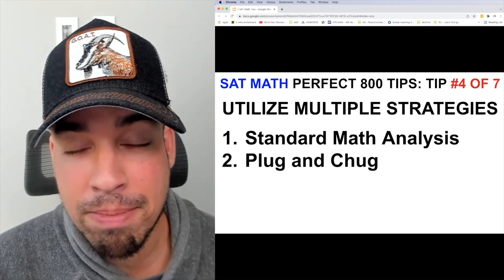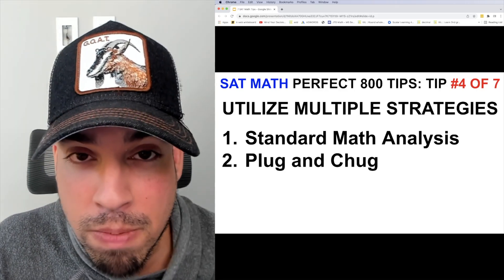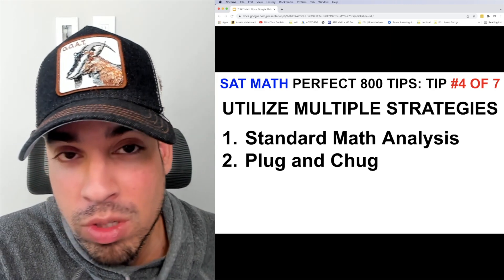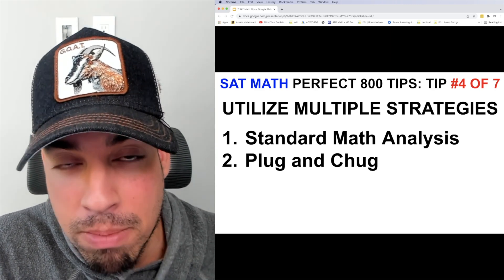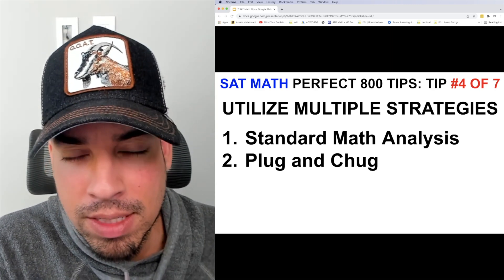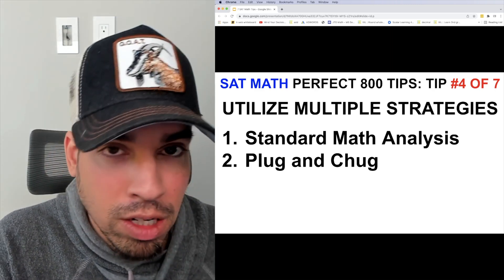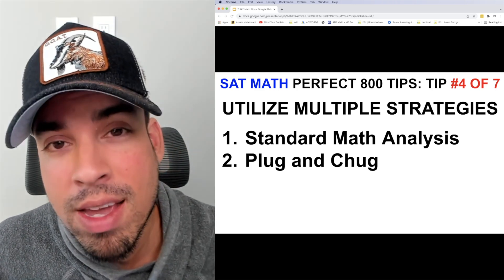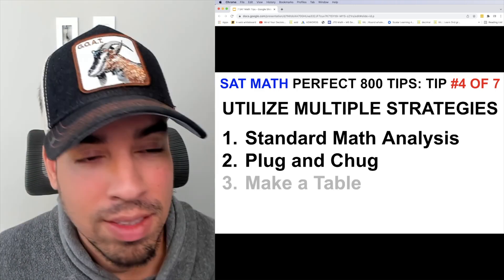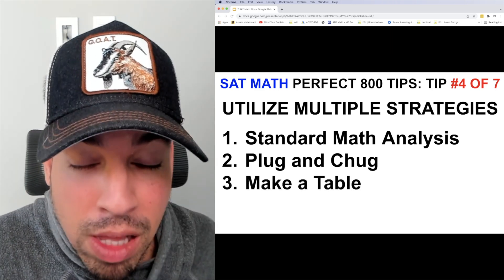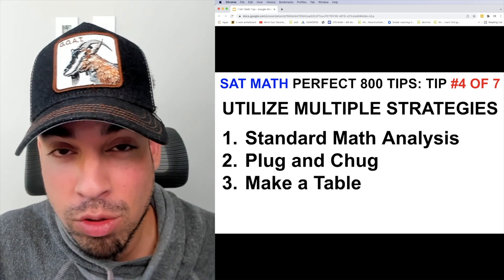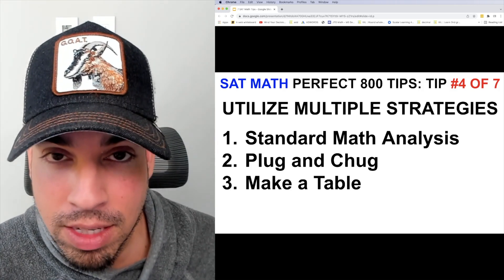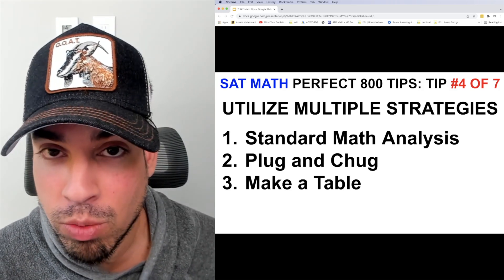Plug and chug means I can work backwards from the answer choices — I can take answer choices A, B, C, and D, start plugging them into the equation, and see what connects or hits.